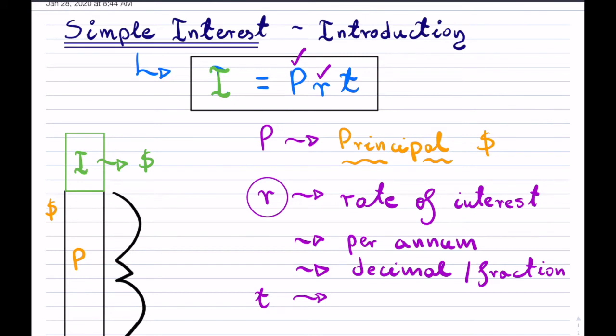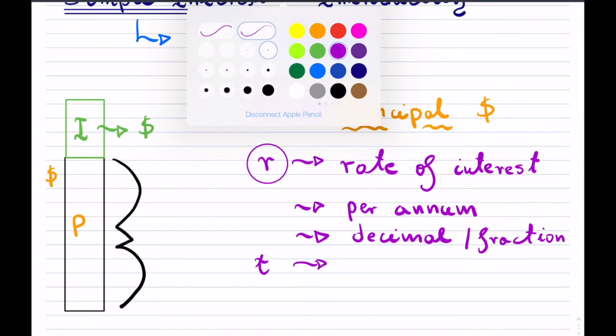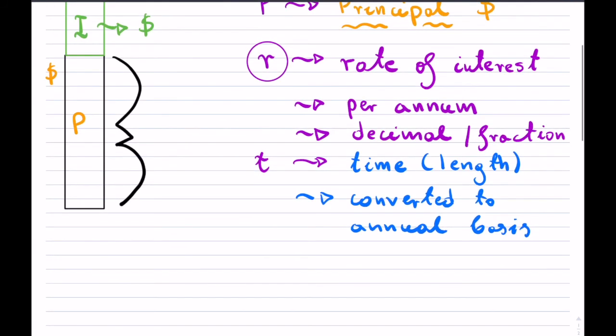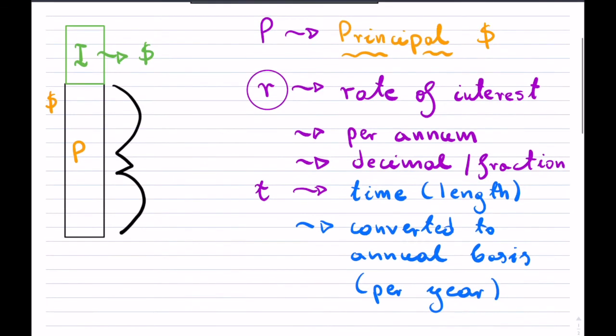We have our principle, our starting point, we have our rate, which is the interest. And now, of course, it is dependent on how long of time this principle is making money for you or possibly how long you have borrowed it for. So the last item that we have here, that is time. And it is the length that we have. And what's key about this time is it is always converted to an annual basis, which just simply means per year.